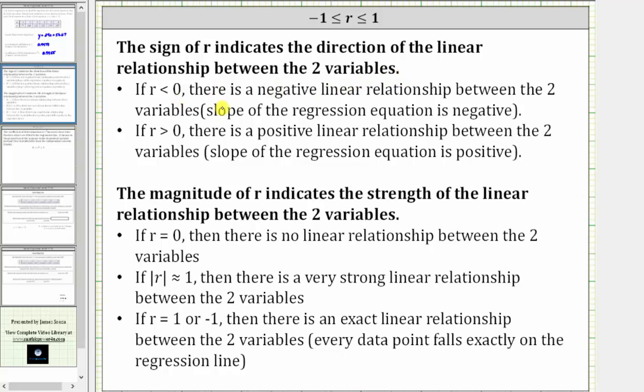If r is less than zero or negative, there is a negative linear relationship between the two variables, and therefore the slope of the regression equation is negative. If r is greater than zero or positive, like in our case, there is a positive linear relationship between the two variables, and the slope of the regression equation is positive, which we can verify from our results.